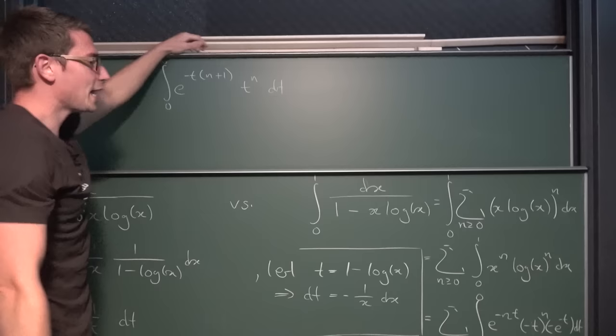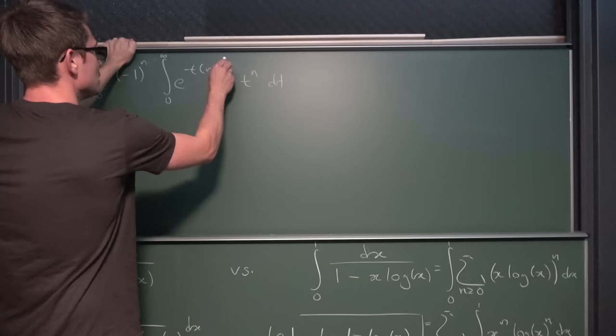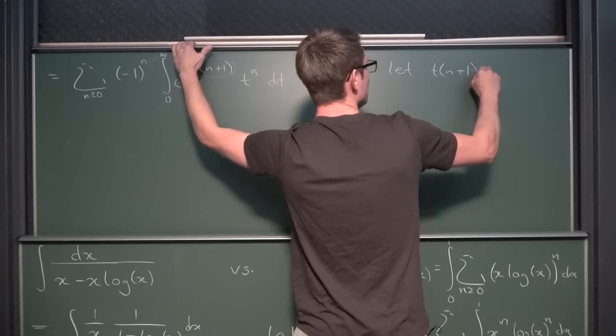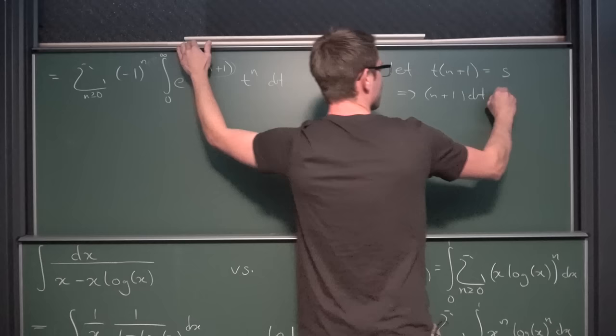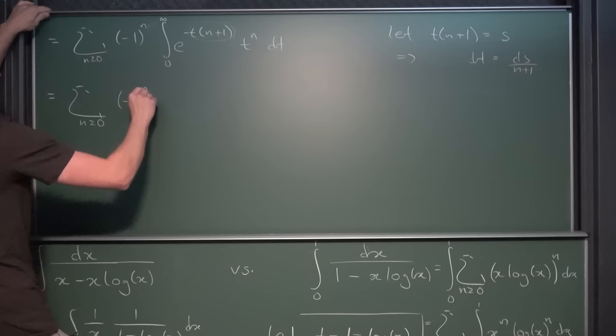This looks actually way better than before. We could make use of integration by parts here, but we can go a bit further. If we substitute t times n+1 for s, we get that n+1 dt equals ds, or dt equals ds over n+1. Plugging 0 into t gives s equal to 0, and as t goes to infinity, since n is a positive number, we get positive infinity.